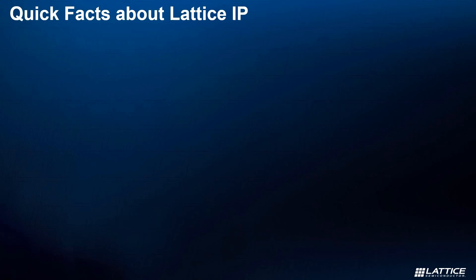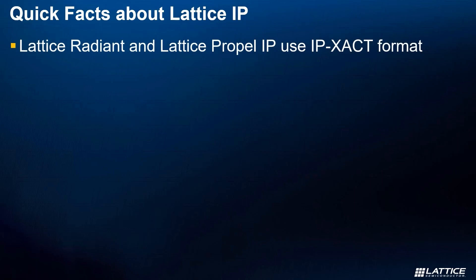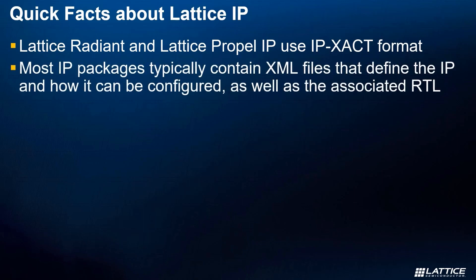The first quick fact you should know has to do with the format of IP in Lattice Radiant and Propel, which is IP exact. Most people will not need to know this information to use IP in the Lattice tool flow; however, to some this may be useful as IP exact is a standard XML format that you would need to know if you wanted to create an IP package entirely from scratch. The next thing you should know is that most IP packages consist of two file types. The first type are XML files, which define the structure for the IP — things like its configurable parameters, IP settings, top-level ports, and bus interfaces.